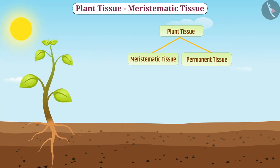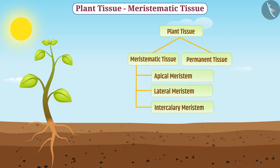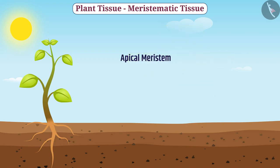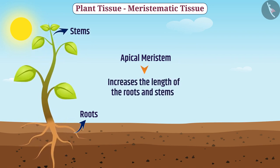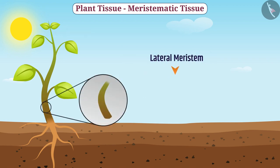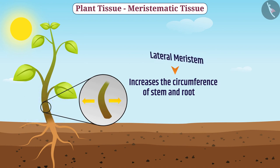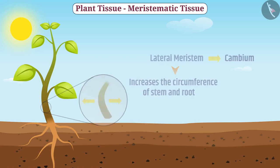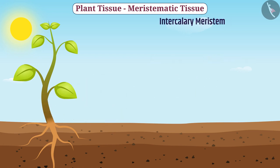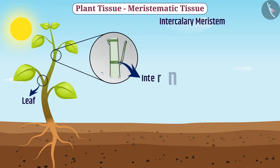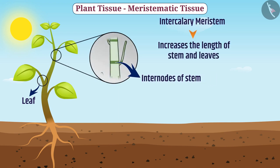On the basis of the area where meristematic tissue is present in plants, meristematic tissue is classified into apical meristem, lateral meristem, and intercalary meristem. The apical meristem is present in the growth part of roots and stems and increases their length. The lateral meristem increases the circumference of the stem and root, and is also called cambium. The intercalary meristem is present in the leaf base and near the internodes of the stem, and increases the length of the stem and leaves.